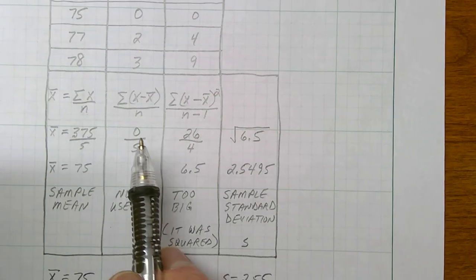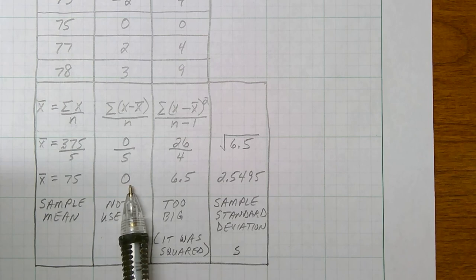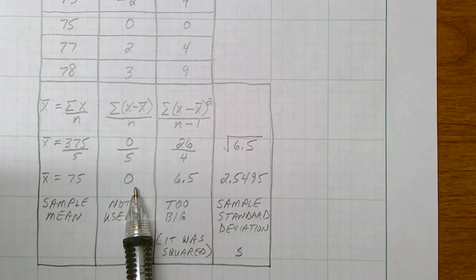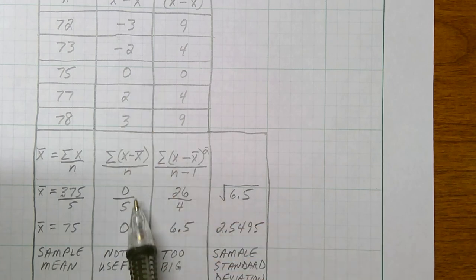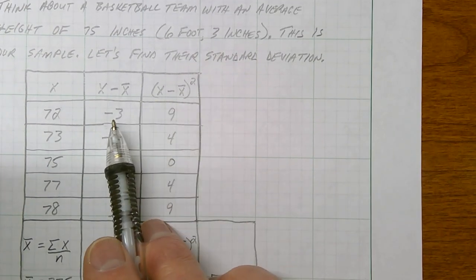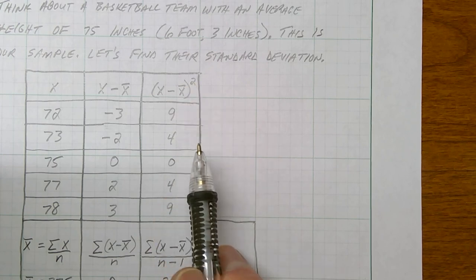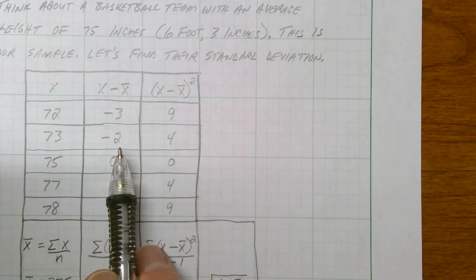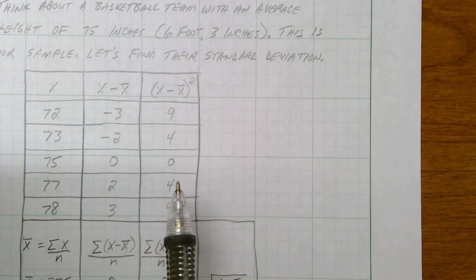The negatives cancel out the positives and we wind up at zero. So we use a trick to get rid of the negatives — we square everything. Those differences, those variations, I'm going to square each one, giving positive numbers. Negative three times negative three is positive nine, squared two gives positive four, and so on. When I square each one, I end up with a bunch of positive numbers which I can now average.